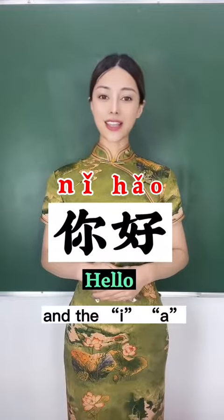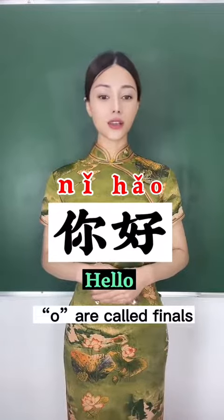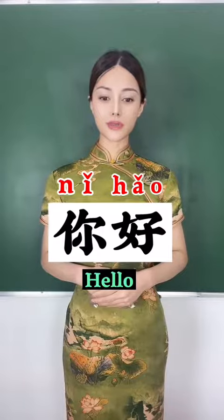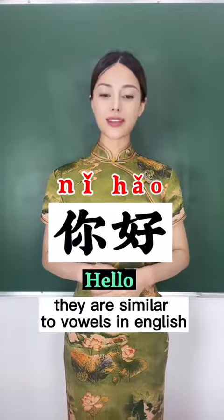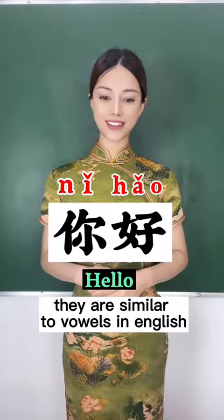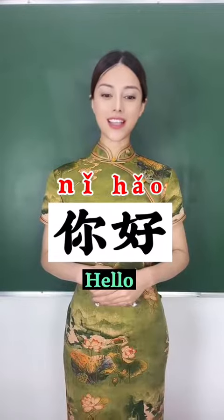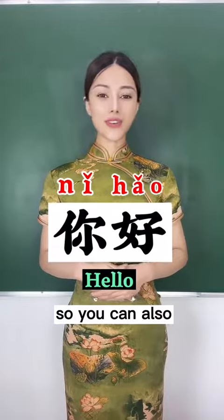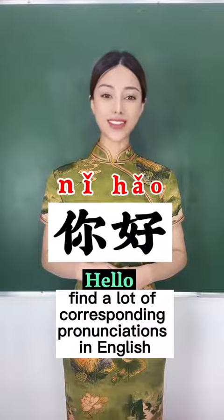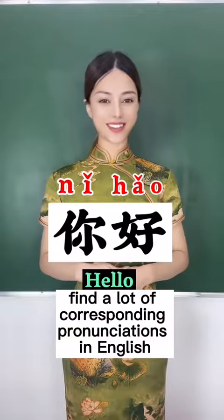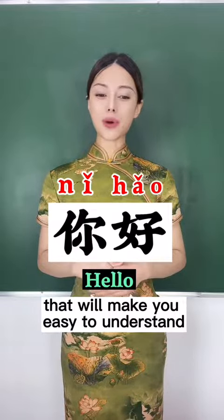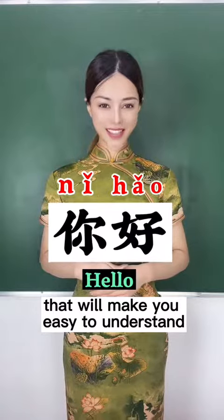And i, a, o are called finals. They are similar to vowels in English. You can also find a lot of corresponding pronunciations in English. That will make it easy to understand.